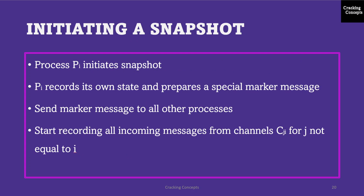To initiate a snapshot, let us say process PI initiates it. PI will record its own state and prepare a special marker message that is distinct from any other application message. Then it will send the marker message to all other processes using the n-1 outbound channels, and also start recording all incoming messages from channels CJI where j is not equal to i.